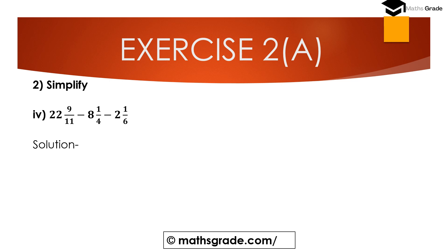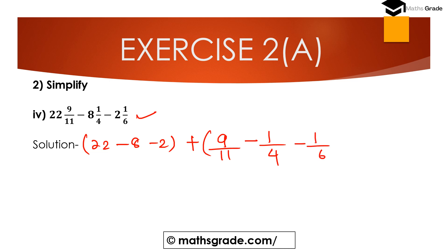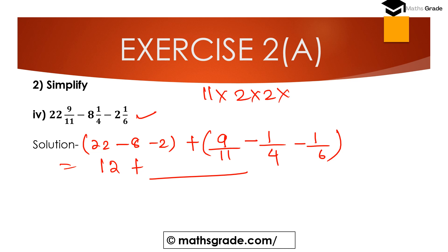Now question number 4: 22 and 9/11, minus 8 and 1/4, minus 2 and 1/6. Separate whole numbers: 22 minus 8 minus 2, and fractions: 9/11 minus 1/4 minus 1/6. Whole numbers: 22 minus 10 is 12. Find LCM of 11, 4, and 6. Prime factorization of 11 is 11; prime factorization of 4 is 2 × 2; prime factorization of 6 is 2 × 3. So LCM is 11 × 2 × 2 × 3 = 132.